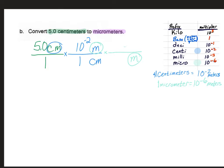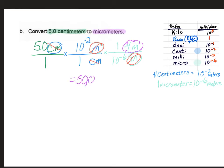That will cancel the meters out. We're going to put micrometer on top. With the meters we put 10 to the negative 6, and with the micrometer we put a 1. So in the first step we cancel the centimeters out, and in the second step we cancel the meters out — we are now left with our answer in micrometers. We put this into our calculator: start with 5, divide by 1, multiply by 10 to the negative 2, divide by 1, multiply by 1, and divide by 10 to the negative 6, which gives us 50,000 micrometers.